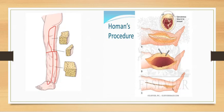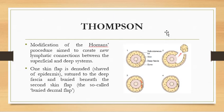In the Homan's procedure, an incision is made, skin flaps are raised, subcutaneous fat is removed, and skin is closed primarily. Thompson's procedure is a modification of Homan's aimed at creating new lymphatic connections between the superficial and deep system: one skin flap is denuded of epidermis and sutured to the deep fascia, then buried beneath the second flap — this is called the buried dermal flap. Subcutaneous tissue is removed, the dermal flap is sutured deep, and skin is closed over it to form new lymphatic channels.